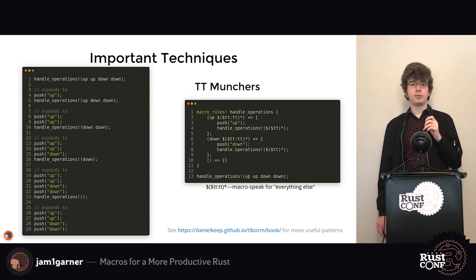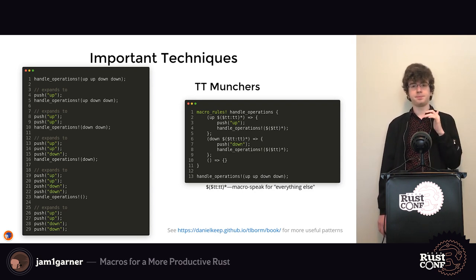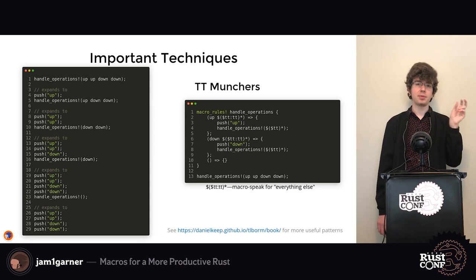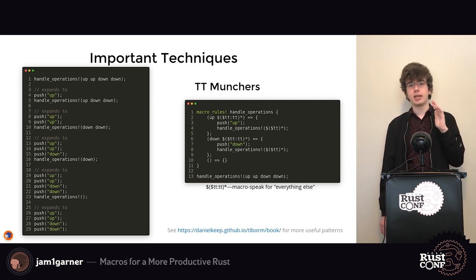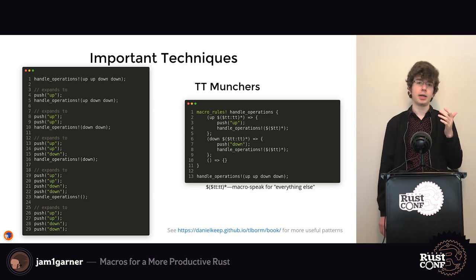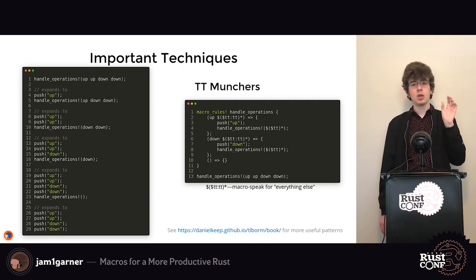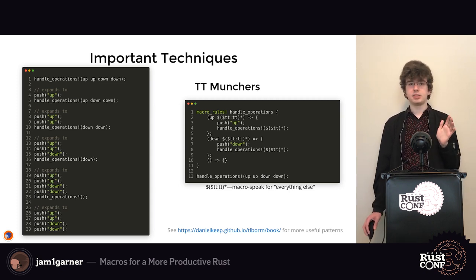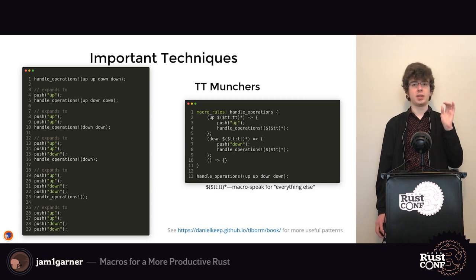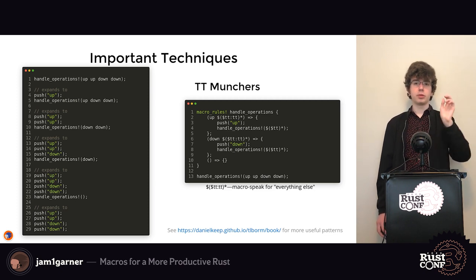In this example we match against either `up` or `down`, each followed by the rest of the token trees. With input `up up down down`, it matches the first `up`, captures `up down down` as the rest, and passes that back into the macro. Recursive calls handle them one at a time — down, down — until the base case is hit when nothing is passed in, and it expands to nothing.